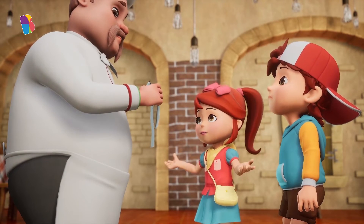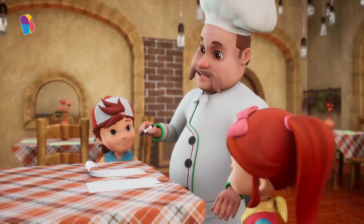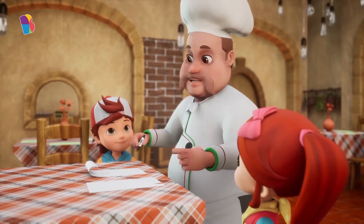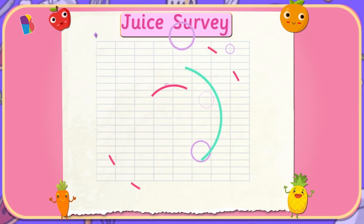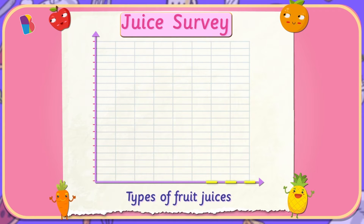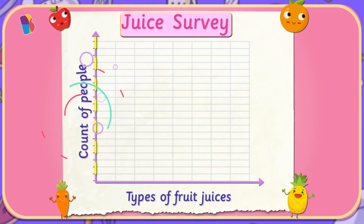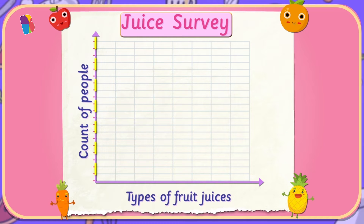How are we going to make a bar graph using tally marks? We will make a vertical bar graph using the data in the survey. Vertical bar graphs represent data vertically. The first thing we should decide is its title. How about we name the graph 'Juice Survey'? That is perfect. Next, we'll draw the axes. There are two axes in a bar graph — vertical and horizontal. The horizontal axis represents the types of fruit juices and the vertical axis represents the count of people. The data about the count of people will be on the vertical axis, so the bars will expand vertically.